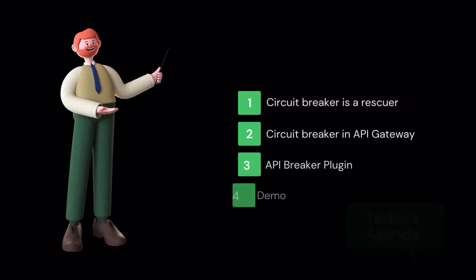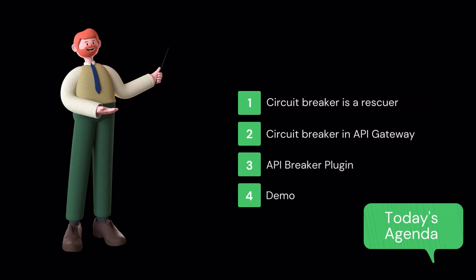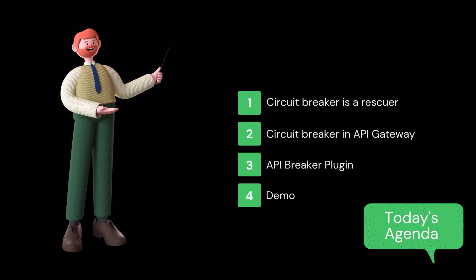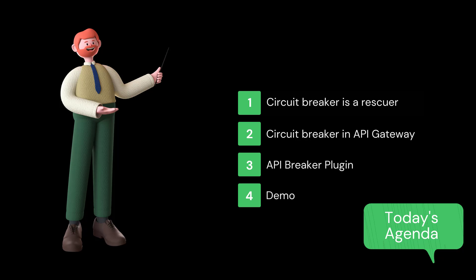Just to recap what we learned today: we covered in which situations we can use the circuit breaker pattern for our microservice APIs to improve stability and resiliency. We also covered circuit breaker implementation in an API gateway — how the API gateway can act as a proxy for operations that might fail and support circuit breaker functionality. We learned that Apache APISIX provides an API breaker plugin to handle all three states that the circuit breaker pattern introduces. And at the end, we had a short demo. I hope you liked this video. Thank you for watching.